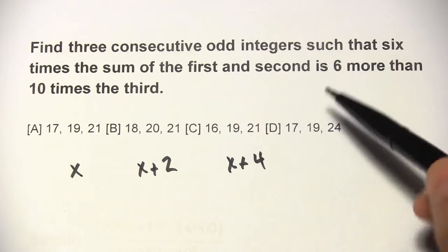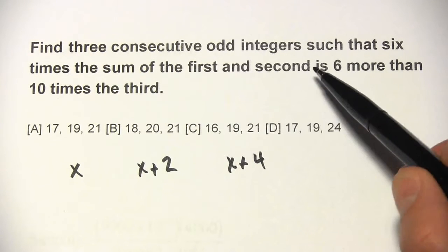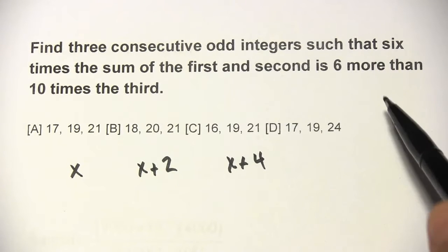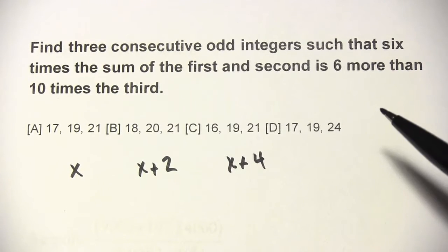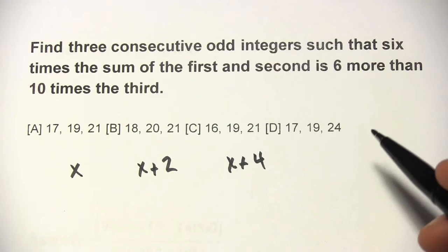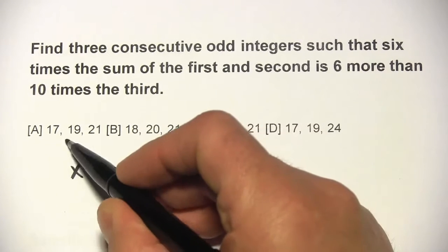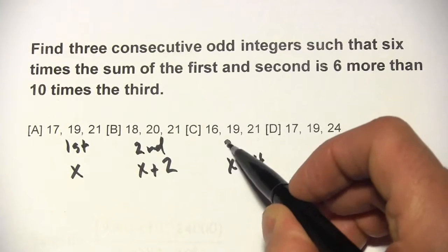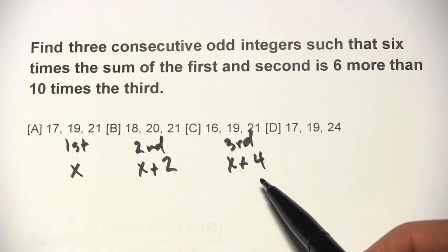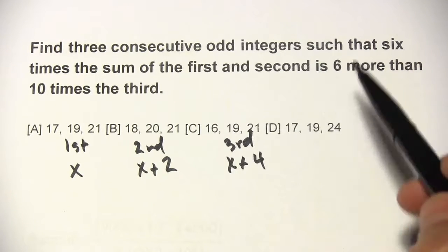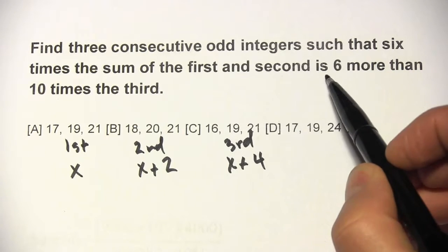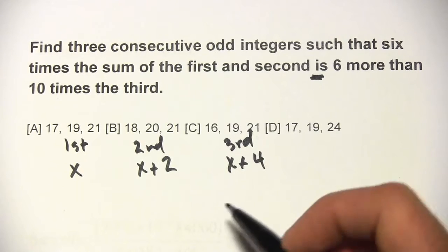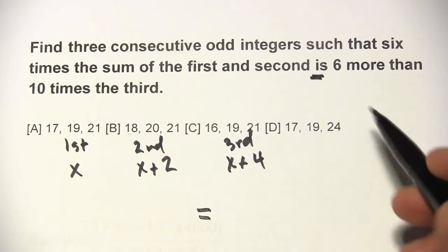Let's look at this first problem. It says: find three consecutive odd integers such that 6 times the sum of the first and second is 6 more than 10 times the third. Let's take this a piece at a time. This is our first, our second, and our third — so we've got those defined. I always look for the word 'is' because that's our equal sign in the equation we're going to set up, so let's put that in here.